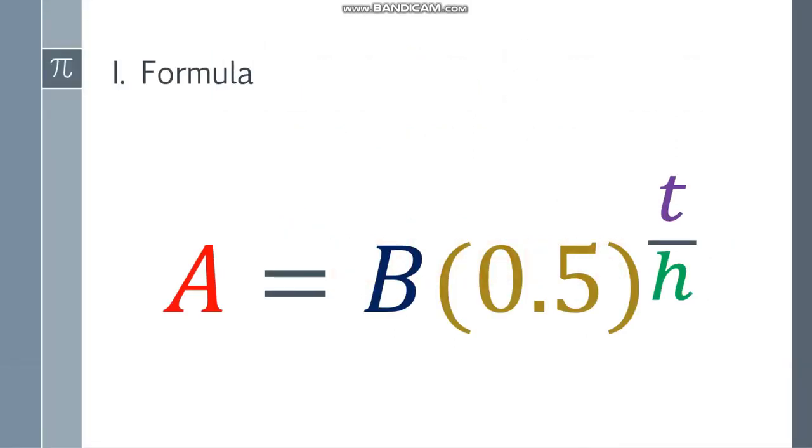we have A is equal to B times the quantity 0.5 to the t over h. Again, this fraction is an exponent of 0.5.